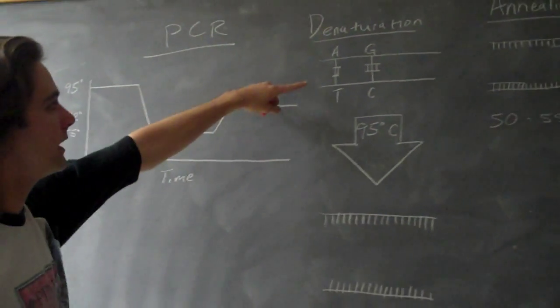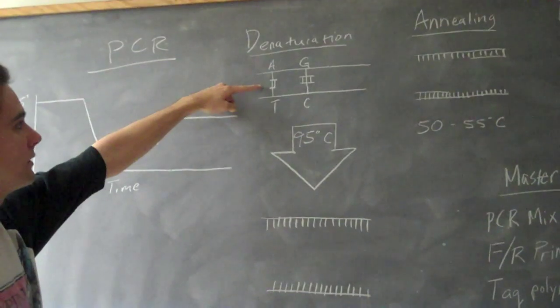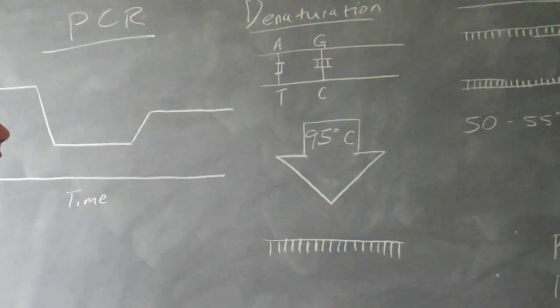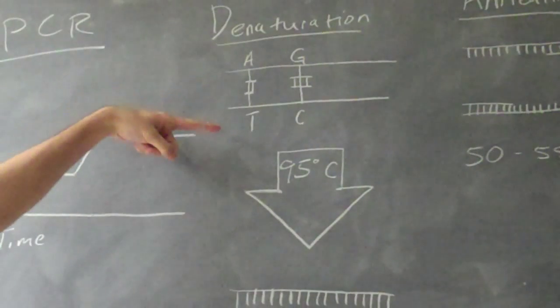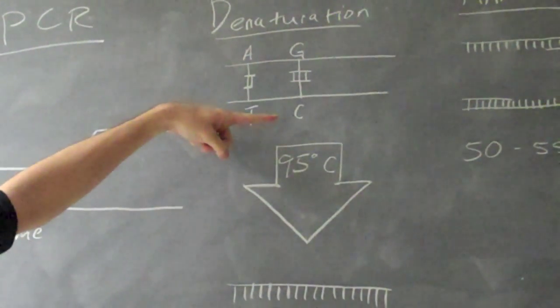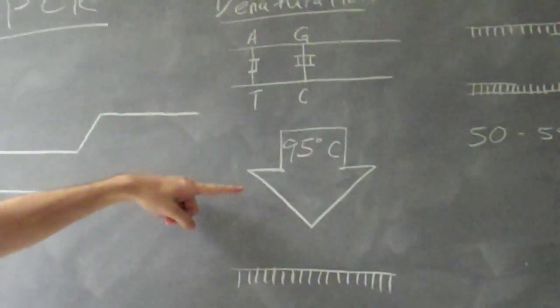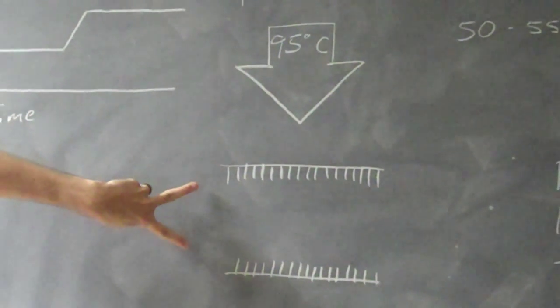In denaturation, heat is used to break apart the two or three hydrogen bonds that are in between the adenine and thymine or the guanine and the cytosine. So when you apply the heat, one strand breaks into two.